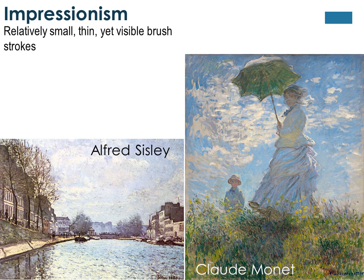Impressionism is relatively small, thin, yet visible brush strokes that make up a whole image. Monet is one of the famous artists to adapt this style. When you got close to the painting, you'd mostly see little dots, but when you backed away from it, the picture would come into focus.